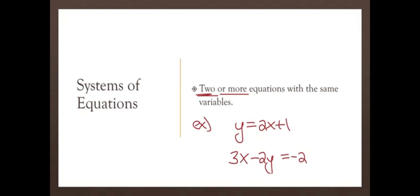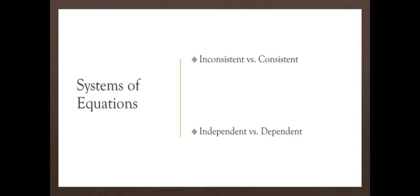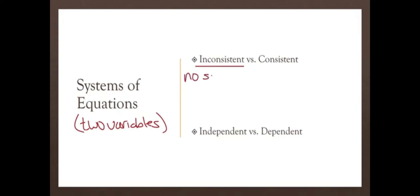Systems of equations can be classified as inconsistent or consistent, independent or dependent. We're going to talk about systems with two specific variables, meaning just lines. Inconsistent means there is no solution. When you have two lines with no solution, they are never going to intersect — in this case, they'll be parallel to each other. That will be inconsistent.